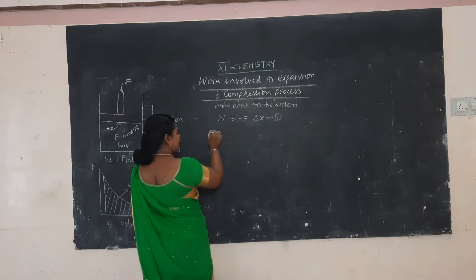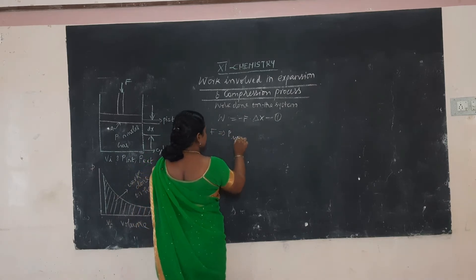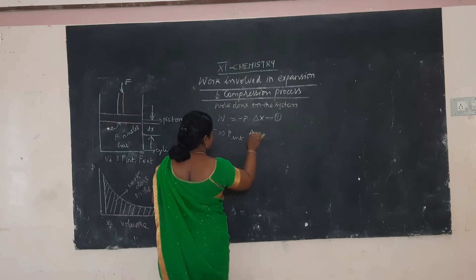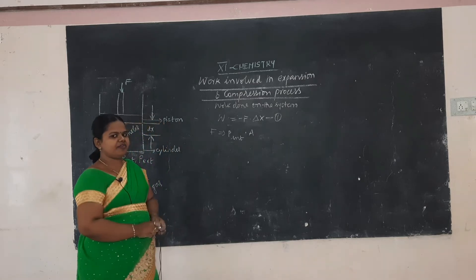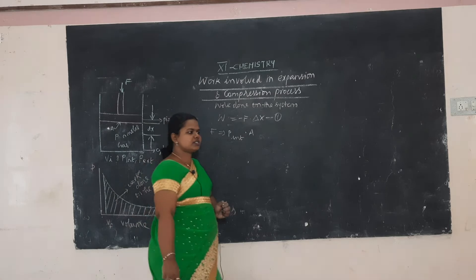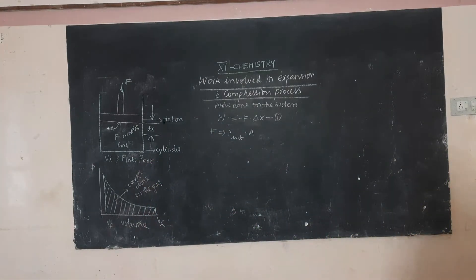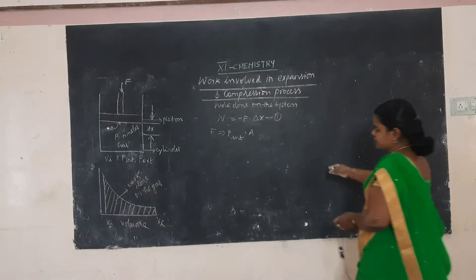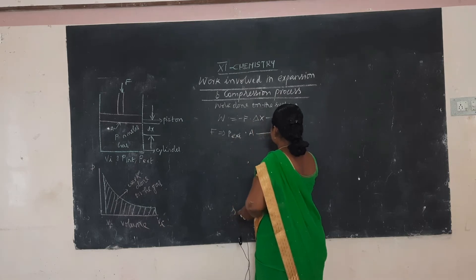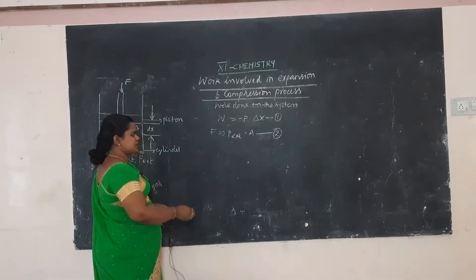We can write F as P_ext × A, where P_ext is the external pressure and A is the cross-sectional area. So F = P_ext × A — that is the second equation.